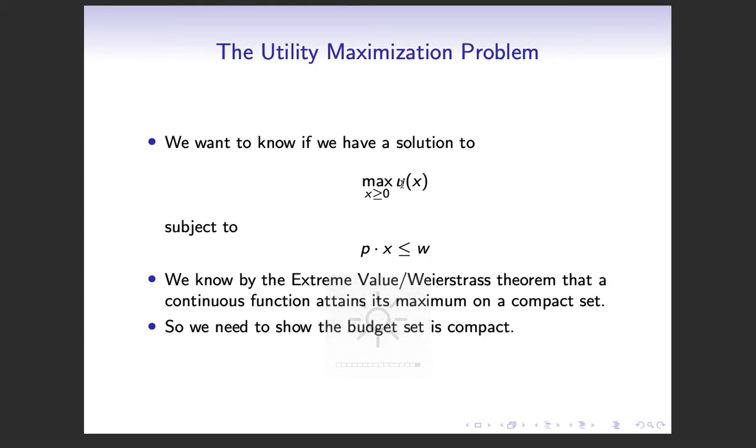We know that our utility function that we're working with is usually continuous, so if the function is continuous over a compact set, then we know that it attains its maximum. And then from there we can use first-order conditions or other conditions to find what the maximum is. So it's good to know how to show that the budget set is compact.